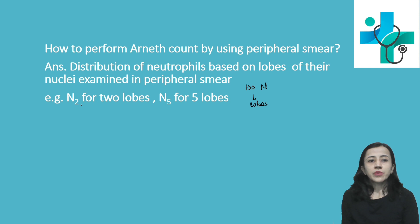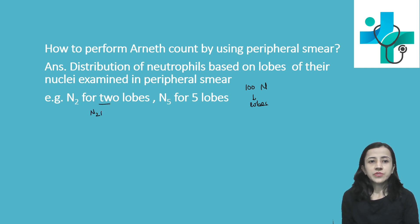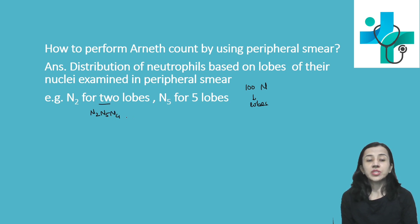Note down the number of lobes in each neutrophil. For example, if we find a neutrophil with 2 lobes, write it down as N2. If it has 5 lobes, N5. If 4 lobes, N4. This way you count 100 cells.